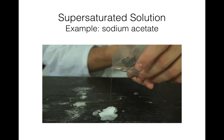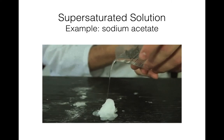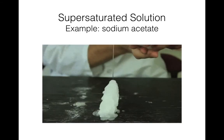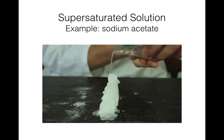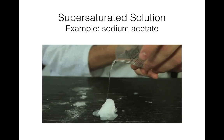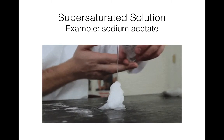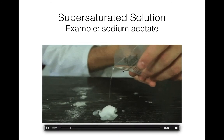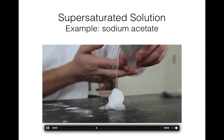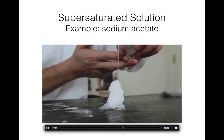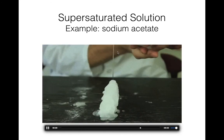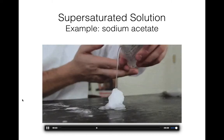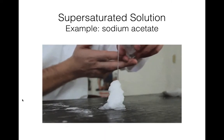Sodium acetate is actually used in certain types of hand warmers — the liquidy hand warmers where you snap a little metal button and they solidify and get really hot immediately. That's a supersaturated solution of sodium acetate. In this video, the solution being poured is supersaturated. When you pour it onto some crystals of sodium acetate, because it's so unstable, it will immediately solidify once it touches those crystals, and you can build cool structures with it.